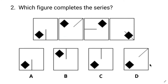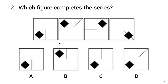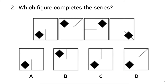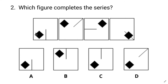Let's go to the second problem — you can solve this with me. There are two elements in each image: a square and a line. First, let's focus on the square. In the first image, the square is in the bottom left corner, and it has moved to the top left corner, then to the top right corner, then to the bottom right corner. So the square has been rotating in a clockwise direction. In the next image, the square should be in the bottom left corner, so the answer can be either A, C, or D.